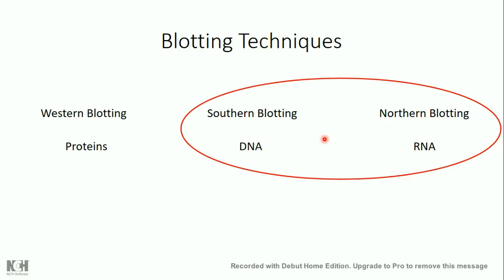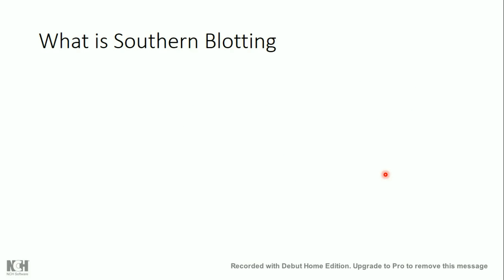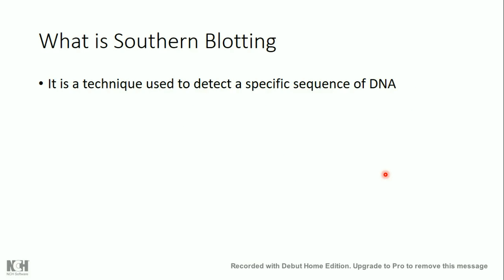The principle of these two techniques is very similar — basically they are the same technique but with some differences, because southern blotting is used for DNA and northern blotting is used for RNA. So let's start speaking about southern blotting technique. As I told you, southern blotting technique is used to detect a specific sequence of DNA.